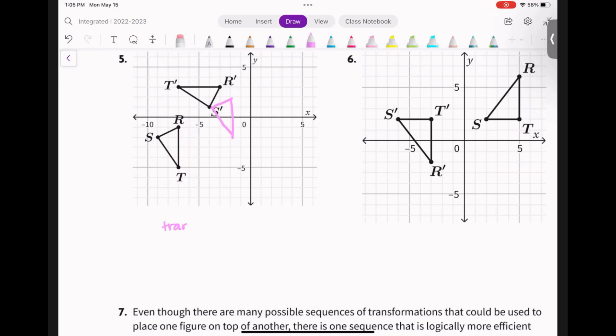Translate so point S is on S prime. We use this word coincide, so you could say translate S so it coincides with S prime.